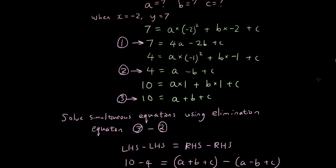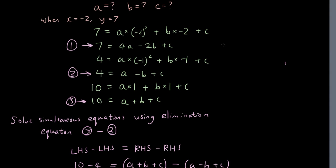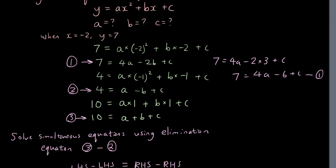Now we can replace b with 3 in all these equations. I'm going to rewrite equation 1 with b substituted: 7 equals 4a minus 2 times 3 plus c, which gives 7 equals 4a minus 6 plus c. And rewriting equation 3 with b equals 3: 10 equals a plus 3 plus c.